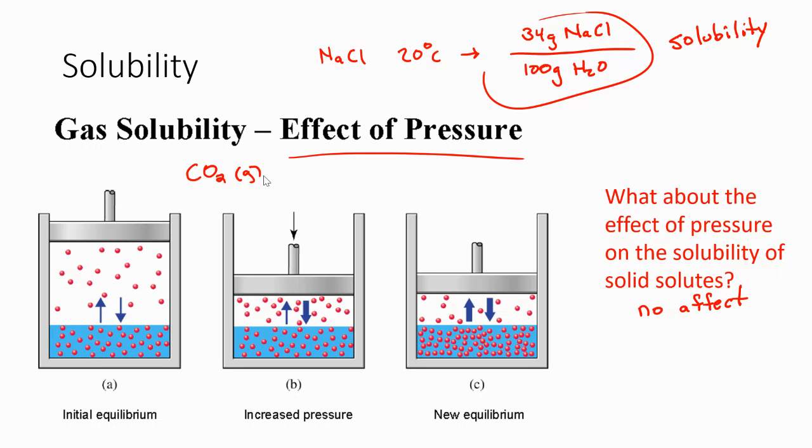Once you open the bottle, you're decreasing the pressure that that solution is under. So a typical soda bottle might be under three atmospheres of pressure. As soon as you open the bottle, it's under one atmosphere of pressure. What we see is that the higher the pressure is for a gas, the more soluble it is going to be.